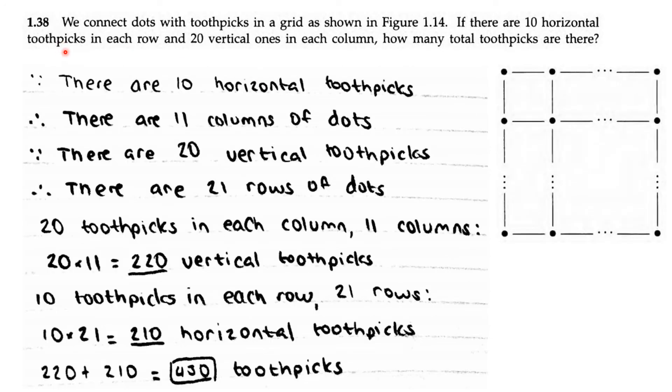AOP Counting on Probability problem 1.38: We connect dots with toothpicks in a grid as shown in figure 1.14. If there are 10 horizontal toothpicks in each row and 20 vertical ones in each column, how many toothpicks are there? Since there are 10 horizontal toothpicks, that means there are 11 columns of dots.